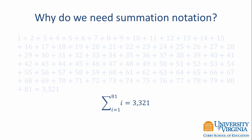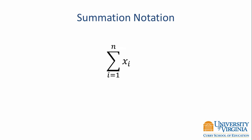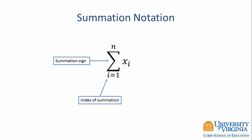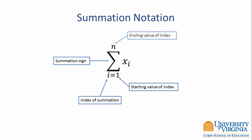We would write it as the sum of i from i equals 1 to 81, and that sum equals 3,321. Summation notation is also referred to as sigma notation because the summation operator is the uppercase Greek letter sigma. In the notation, we have a value that represents the index of summation. It takes on a starting value, and we continue incrementing the index until we get to the ending value. What we are summing are the elements of the data.